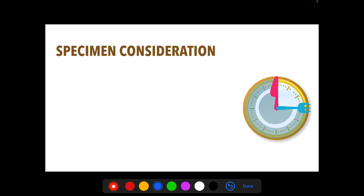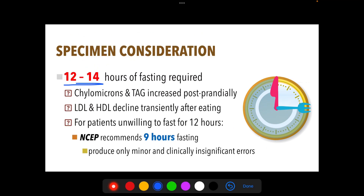For specimen consideration, the fasting hours for lipid profile is 12 to 14 hours. For fasting blood sugar (FBS) or fasting plasma glucose, the recommended fasting time is 8 to 10 hours. In the laboratory, patients are often tested for multiple analytes — both FBS and lipid profile — so you need to be careful in instructing the patient on proper fasting. Fasting means the patient should not eat anything — NPO, nothing per orem.